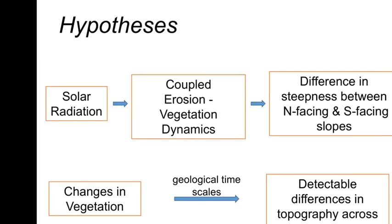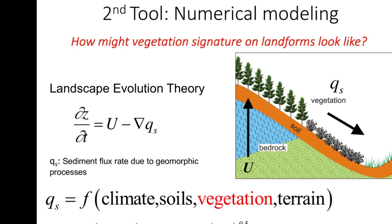Our hypothesis is that in this region, especially these small sub-basins and hillslopes, solar radiation must be coupled with erosion and vegetation dynamics, and it differentiates over the long term the steepness between north-facing and south-facing slopes. There is also a Milankovitch-type component — glacial-interglacial cycles — because New Mexico was wetter than today in the past. The question is: are changes in vegetation over geologic time scale detectable in differences in topography across catchments? Our second tool is numerical modeling.